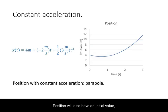Position will also have an initial value, in this example starting at 4 meters. At time equals 0, the slope will be that of the velocity at that time.